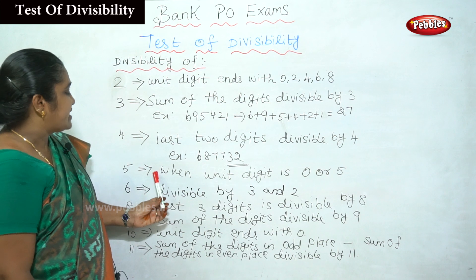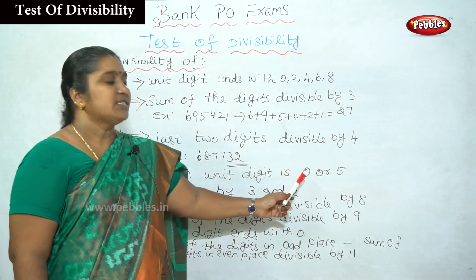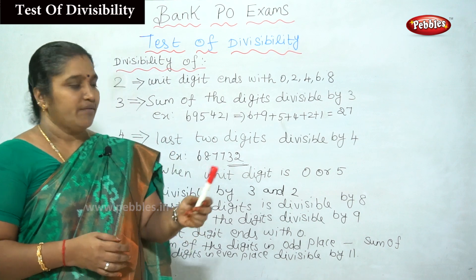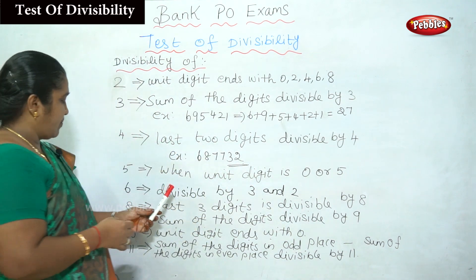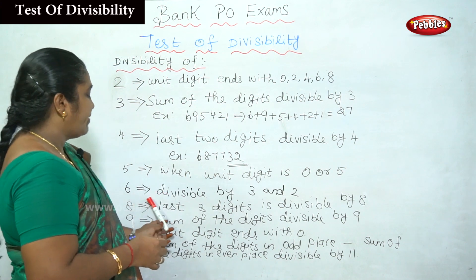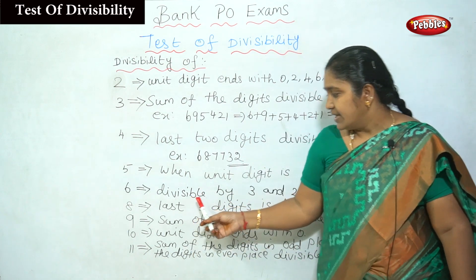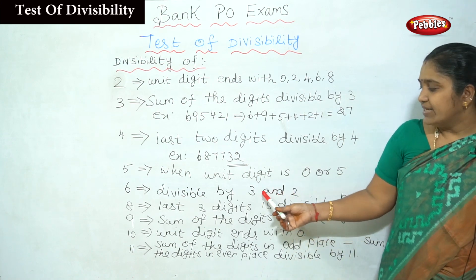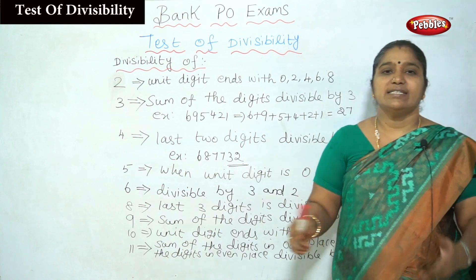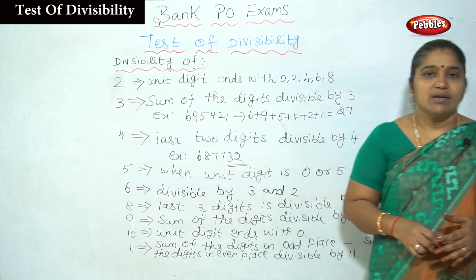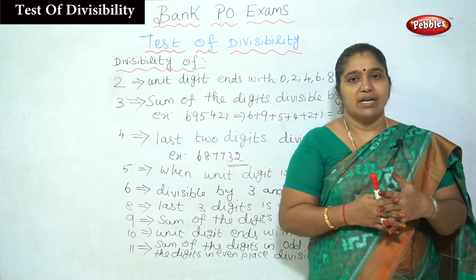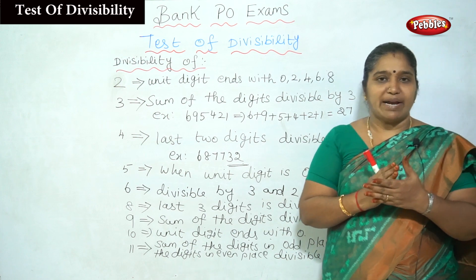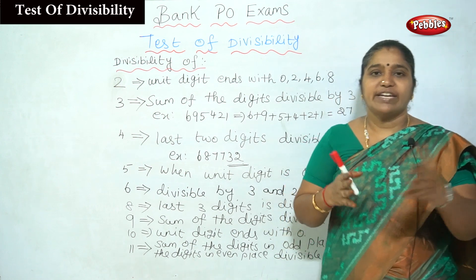For divisibility by 5: if the unit digit is 0 or 5, the number is divisible by 5. For divisibility by 6: the number must be divisible by both 3 and 2. For divisibility by 7: there is no simple similar rule; split the digits in groups of 3 then alternately add and subtract. If the answer is 0, it is divisible by 7.